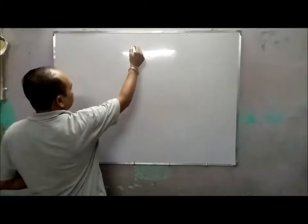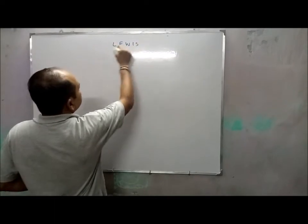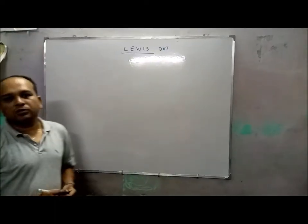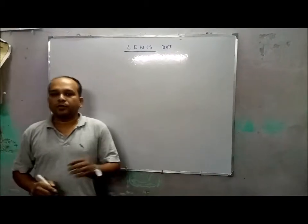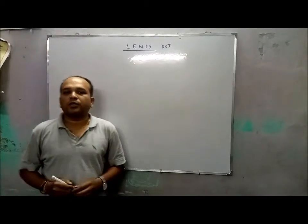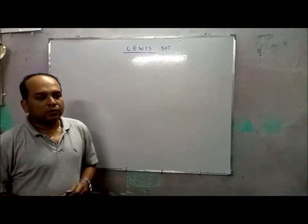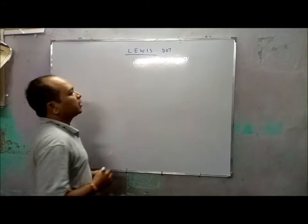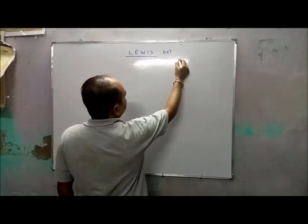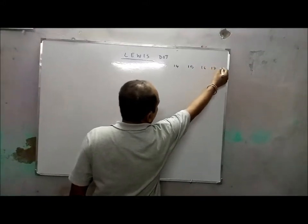What we have to remember for Lewis Structures is the Lewis dot structure — that is some basic concept of the periodic table. In the modern version of the periodic table there are 18 groups. We are taking only the groups from 14, 15, 16, 17, and 18.